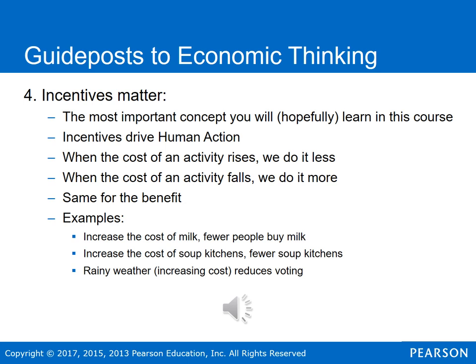For example, if you increase the cost of milk at the supermarket, fewer people are going to buy milk because it's relatively more costly. And it's not just true in market interactions — it's true any time human choice is involved. If you increase the cost of soup kitchens, say by putting a tax on them, you'll see fewer soup kitchens. Also, rainy weather reduces voter turnout because the increased cost of dealing with the rain leads people to vote less.